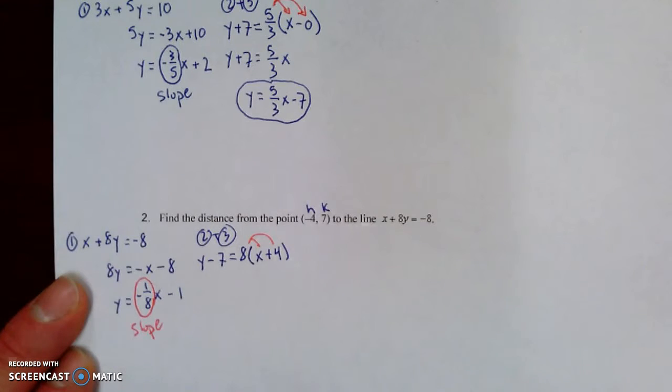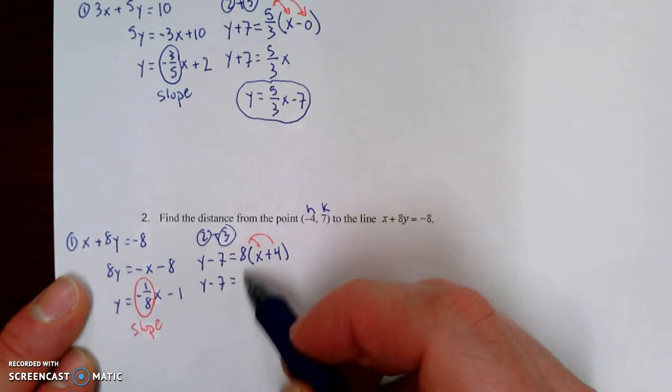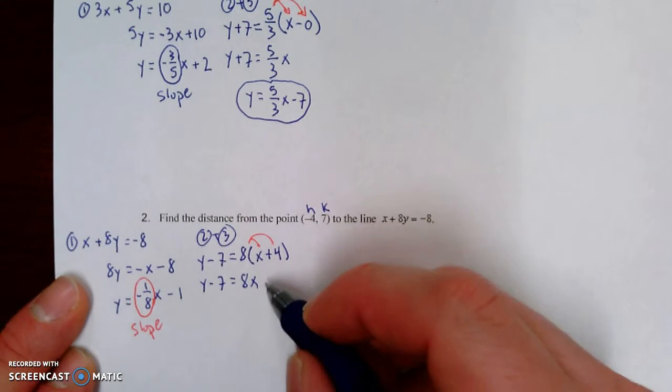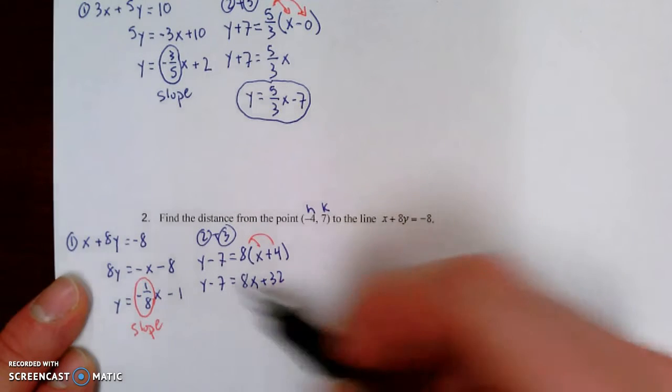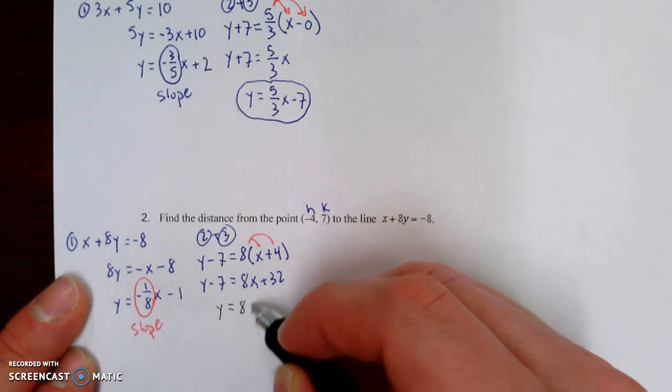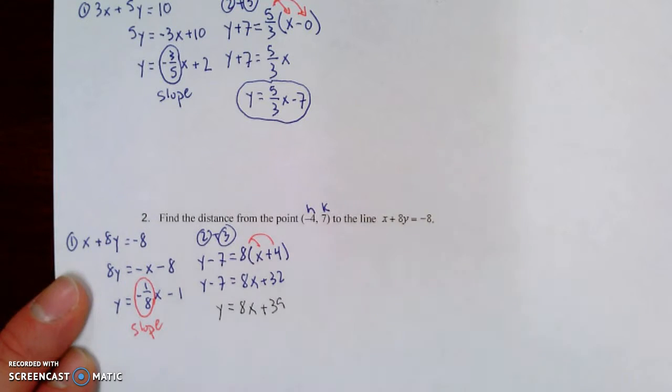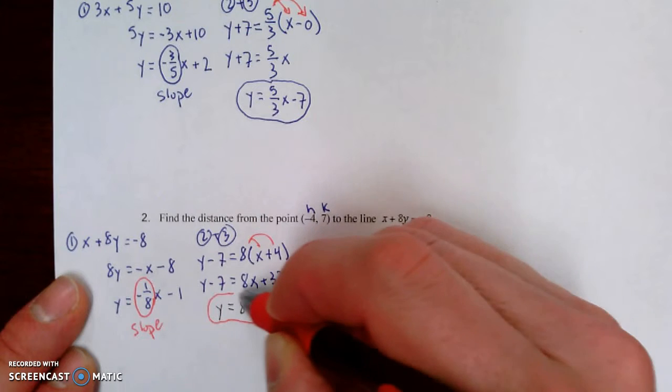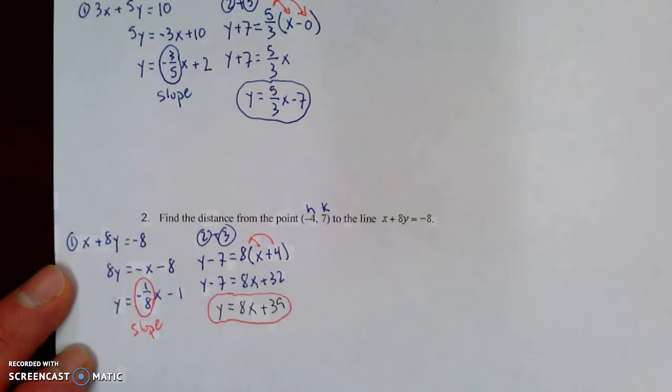First thing we do is distribute, and the y minus seven just stays over here. Eight times x is eight x, and eight times four is 32. And then we're going to add seven to both sides, and we get y equals eight x, and 32 plus seven is 39. So our equation for our perpendicular line is y equals eight x plus 39. So I hope that worked out for you.